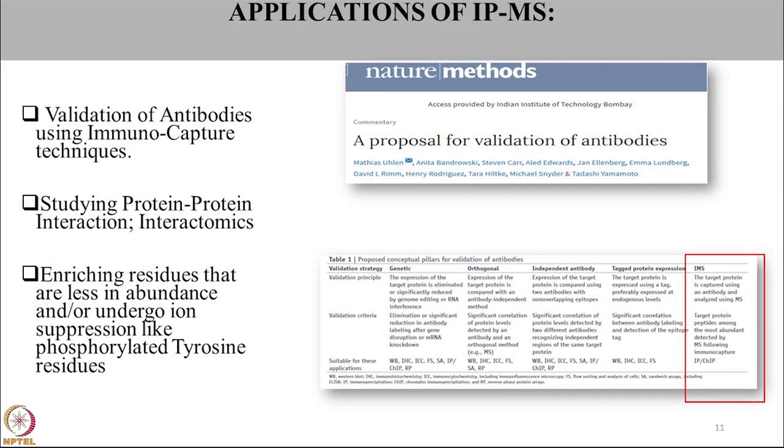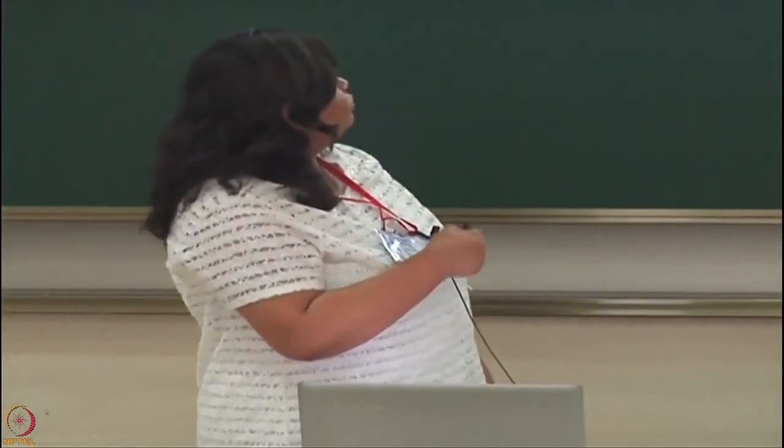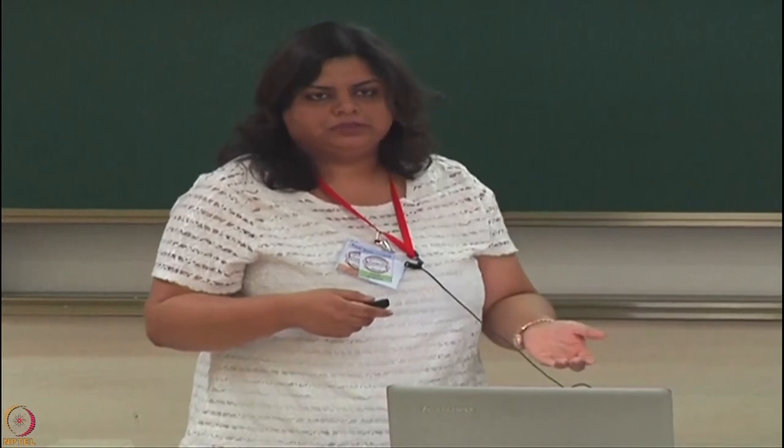Post-translational modifications like ubiquitination are very complex and not easy to identify using a global proteomics approach. Using IPMS we can enrich those residues — for example, we can identify proteins that are ubiquitinated, or use a tyrosine-specific antibody to bind tyrosine-phosphorylated residues and then perform mass spectrometry. Thereby there are many things that you can do with this technique.